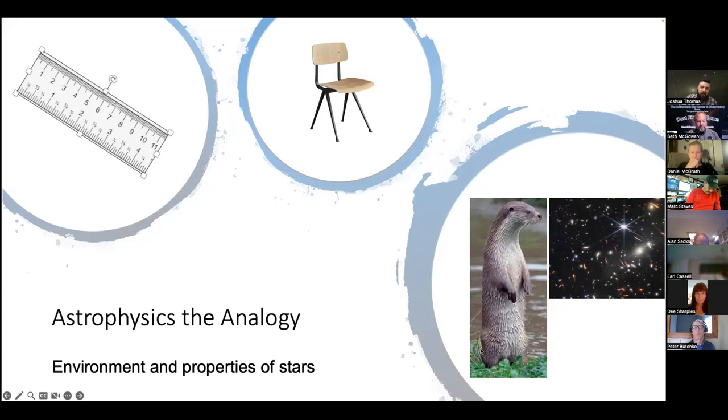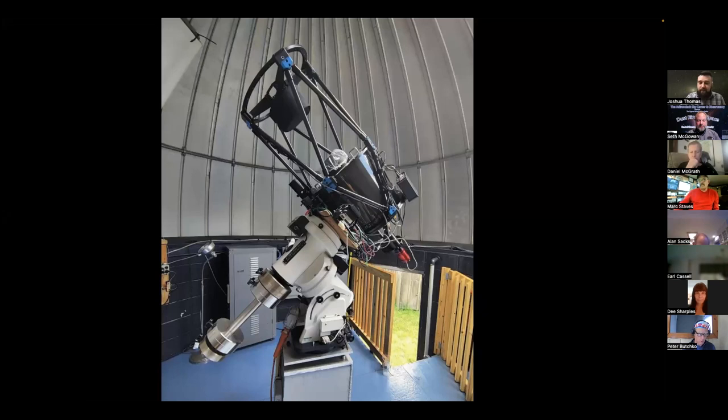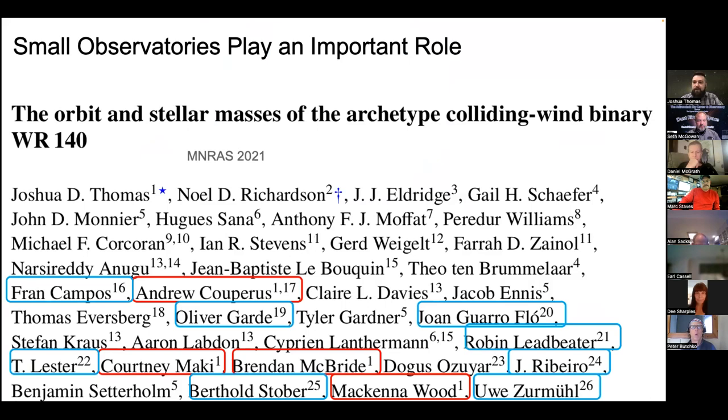I did a lot of this work with a smaller telescope. We published this paper in 2021, where we wanted to understand the masses of the stars in the WR-140 system. The stars that you can't even see in that image are actually a binary, two stars orbiting each other. The blue boxed names are all amateur astronomers with spectrographs, most in Europe, one in Canada. The red boxes were students that worked with me at Clarkson on this.